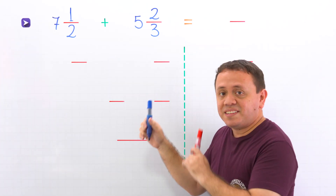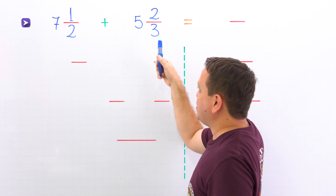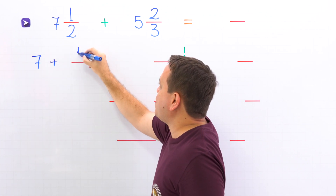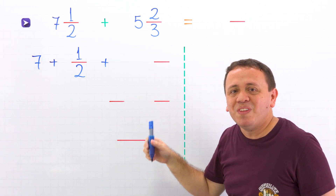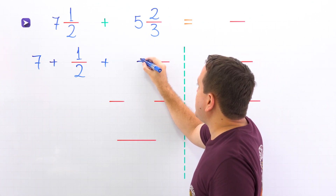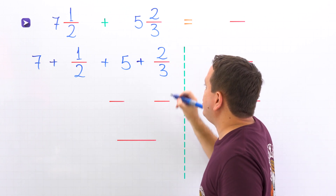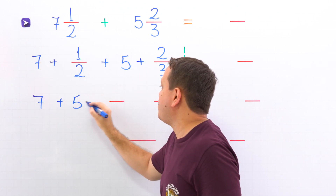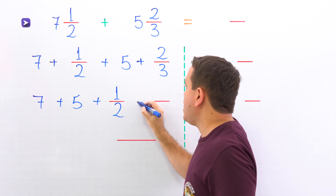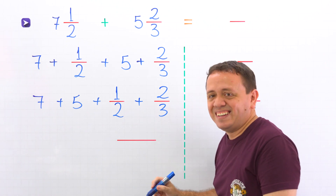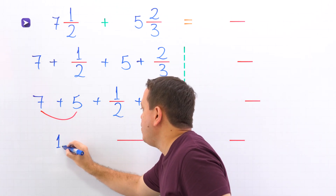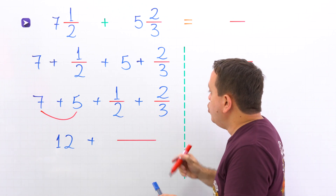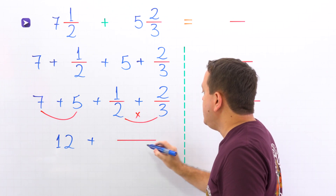Let's move on to the last example. In this example, we will find the sum of 7 and 1 half and 5 and 2 thirds. First, we rewrite the mixed number 7 and 1 half as the sum of a whole number 7 and the proper fraction 1 half. We put the plus sign and here we do the same — we rewrite the mixed number 5 and 2 thirds as the sum of a whole number 5 and the proper fraction 2 thirds. Now we put the whole numbers at the beginning — 7 and 5 — and the fractions at the end: 1 half and 2 thirds. Here we have 7 plus 5 gives us 12. We are going to use the butterfly method, starting by multiplying the denominators: 2 times 3 gives us 6.